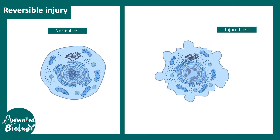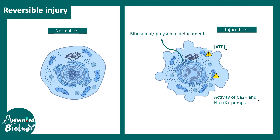Now let's talk about reversible injury and its features. In case of reversible injury, ATP levels drop. When ATP levels drop, the pumps and molecules that require ATP become non-functional — for example, calcium channels and the sodium-potassium ion exchange pump. The ribosomal or polysomal complexes attached to the endoplasmic reticulum get detached, leading to a decrease in protein synthesis. Plasma membrane composition can also change, with alterations in lipid composition, blebbing, or compromised membrane integrity.